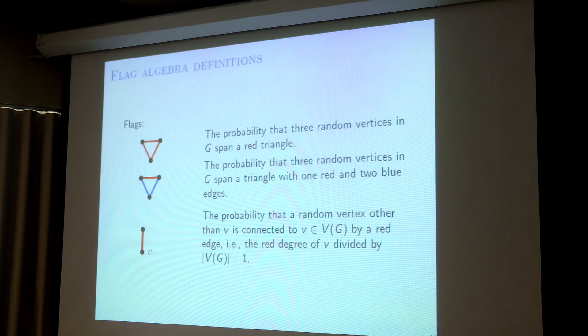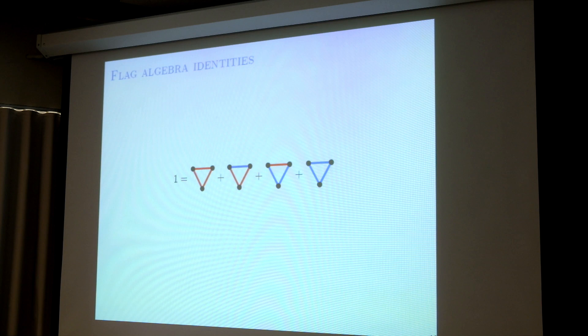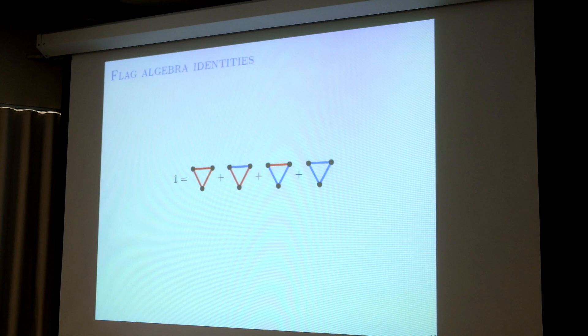Usually you just view this as a density. And because this is called flag algebra, there's something about multiplication. For example, I say one equals the sum of these. What does that mean? It means if I look at three vertices for any graph G, the sum of the densities of these four configurations is one — because if G is two-colored and you look at three vertices, it must induce one of these four cases: complete graph, two edge colors, something, or a blue triangle.